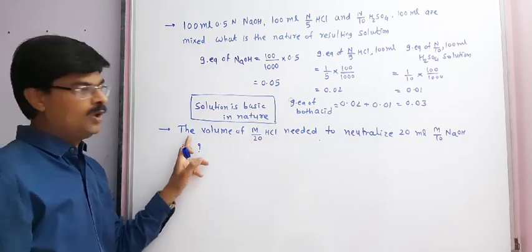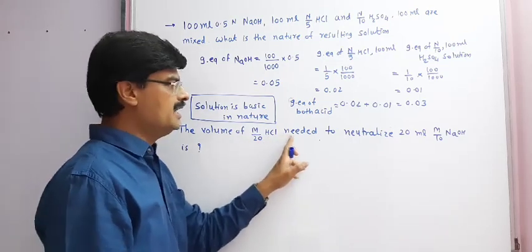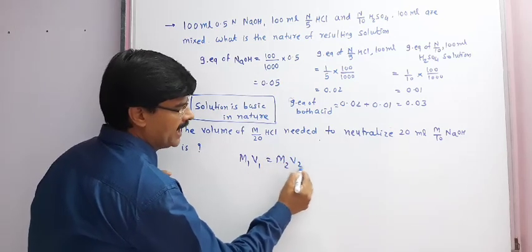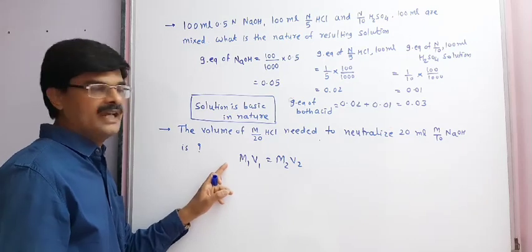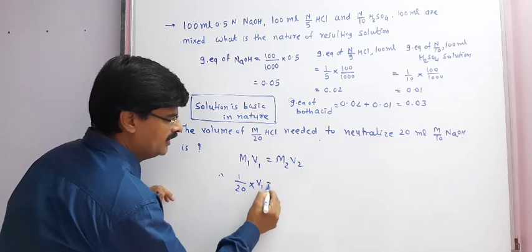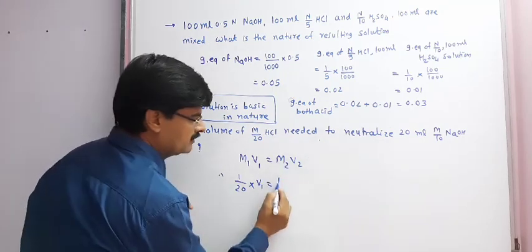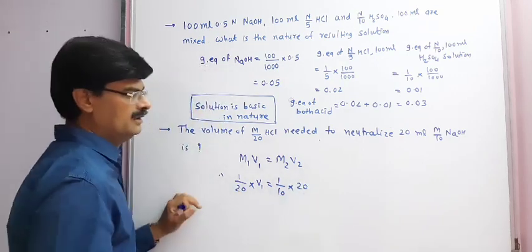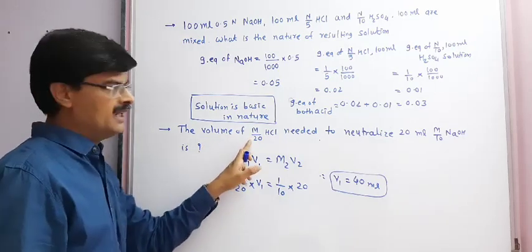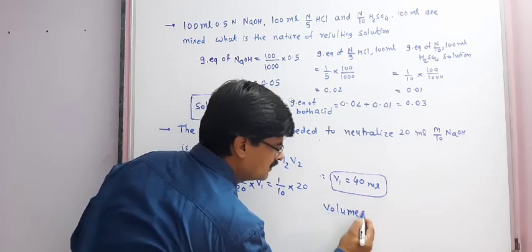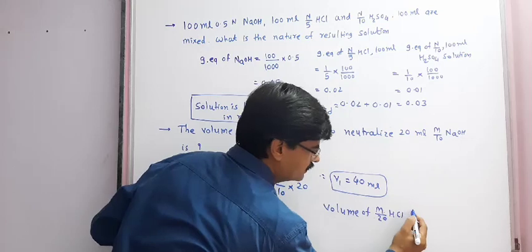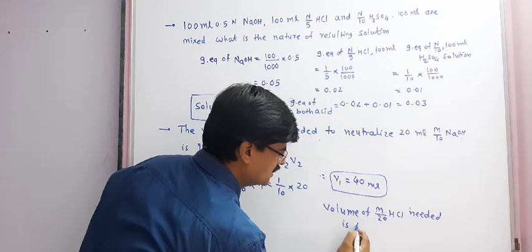In the next question: the volume of M/20 HCl needed to neutralize 20 ml M/10 NaOH solution is what? Applying M1V1 equals M2V2 for neutralization: (1/20) × V1 equals (1/10) × 20. On solving, V1 equals 40 ml. So the volume of M/20 HCl needed is 40 ml.